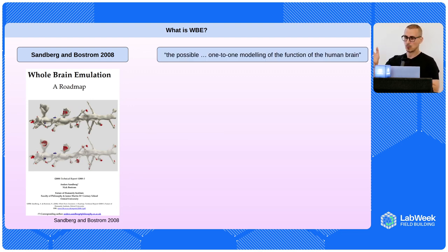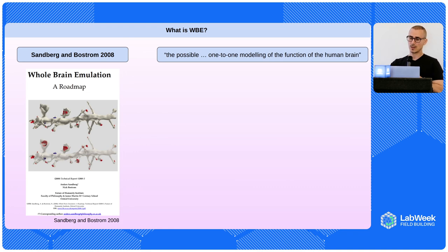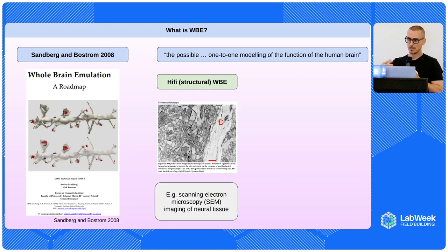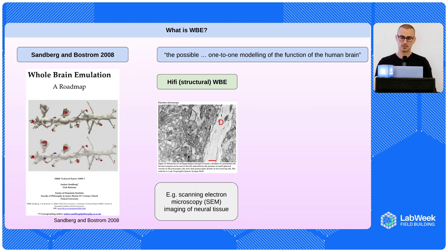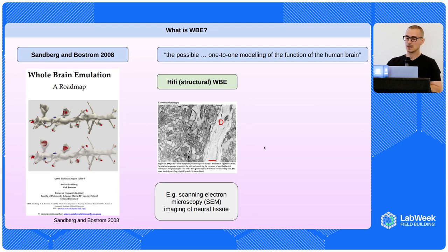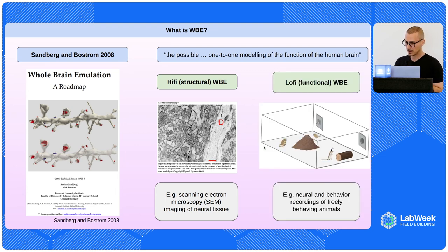One of their quotes: 'the possible one-to-one modeling of the function of the human brain, whatever that means.' The fundamental proposal at the time in 2008 was: we just need to scan the brain — get a very high-fidelity structural scanner image of the brain using perhaps electron microscopy, and then simulate it.